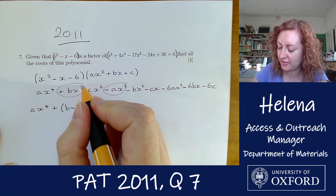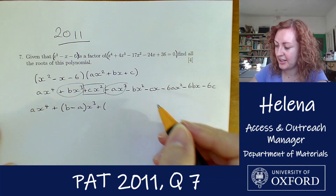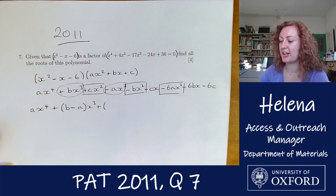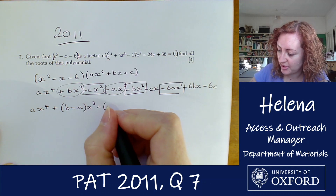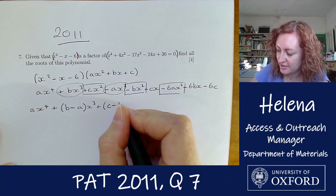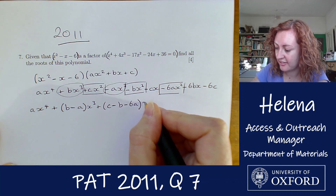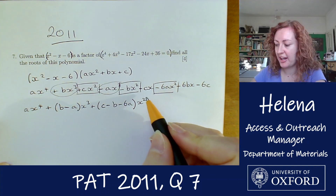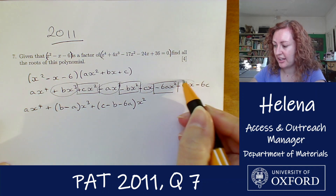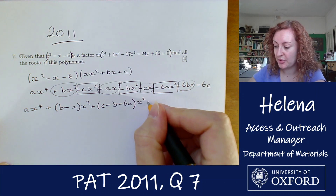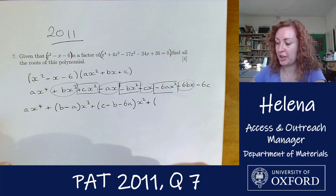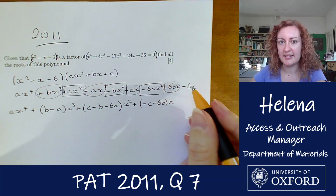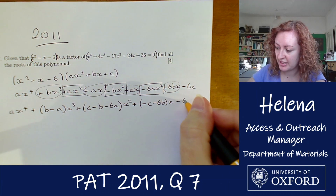For the x squared terms we have cx squared, minus bx squared, and minus 6ax squared, giving (c minus b minus 6a)x squared. The x term is minus cx minus 6bx, giving (minus c minus 6b)x, and the constant at the end is minus 6c.